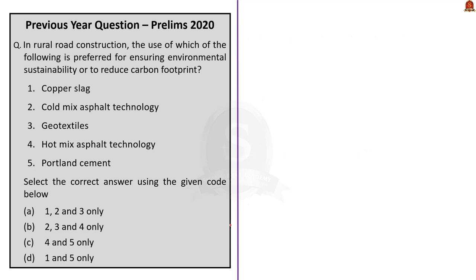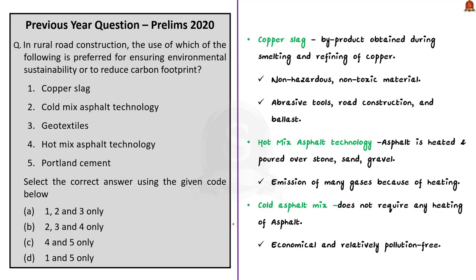Let us see about the products one by one. The first one is copper slag. Copper slag is a byproduct obtained during smelting and refining of copper. Copper slag is non-hazardous, non-toxic material, so it is environment friendly. The waste copper slag can be used as abrasive tools, in road construction, and as ballast. The use of copper slag in construction of roads provides potential environmental as well as economic benefits, which is why it is being used in government road projects.